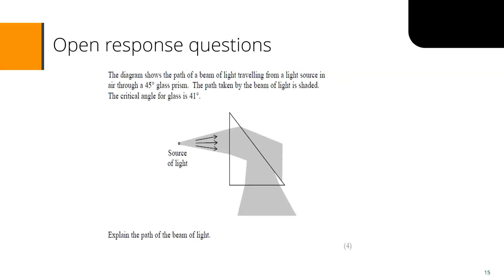Here's an example of an open response question. The diagram shows the path of a beam of light travelling from a light source in air to a 45-degree glass prism. The critical angle for glass is 41 degrees. Students are asked to explain the path of the beam of light. This is worth four marks, so they need considerable detail — a full explanation of what happens at each of the three boundaries: where air meets glass, within the glass, and as it leaves the glass.